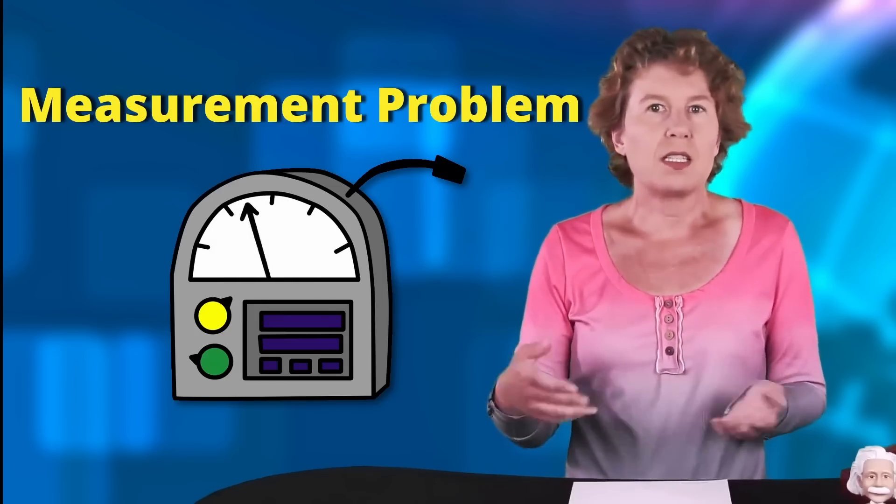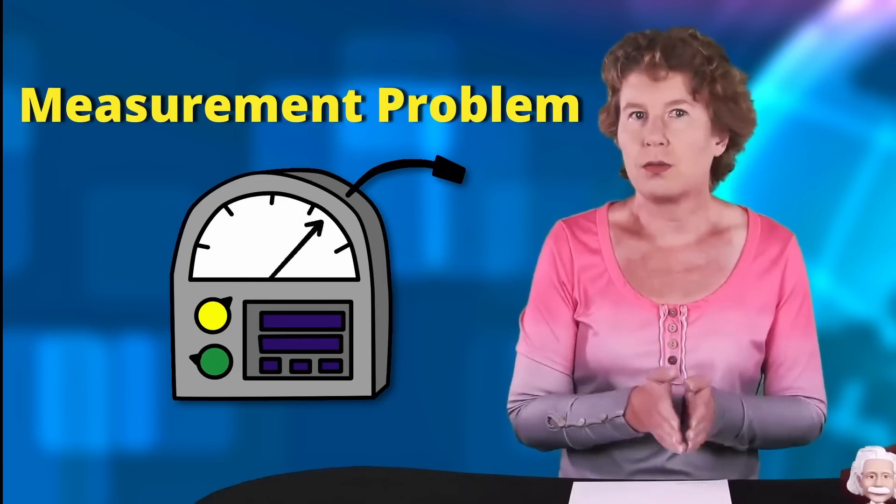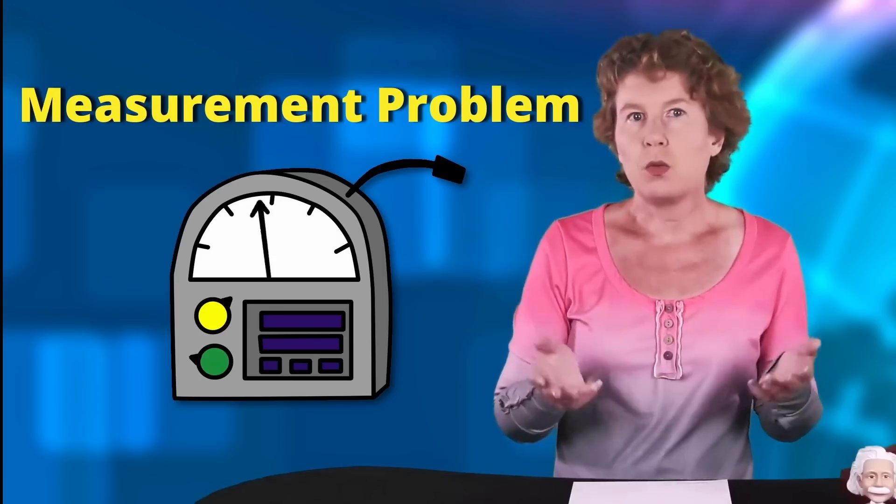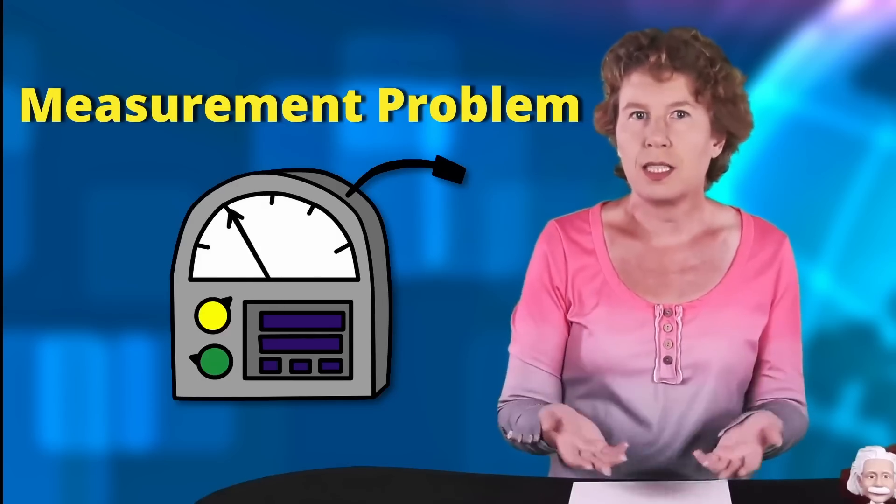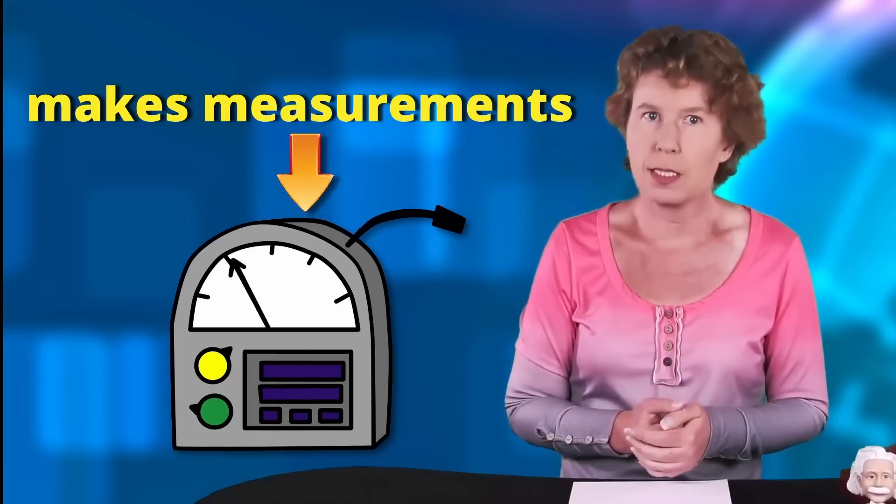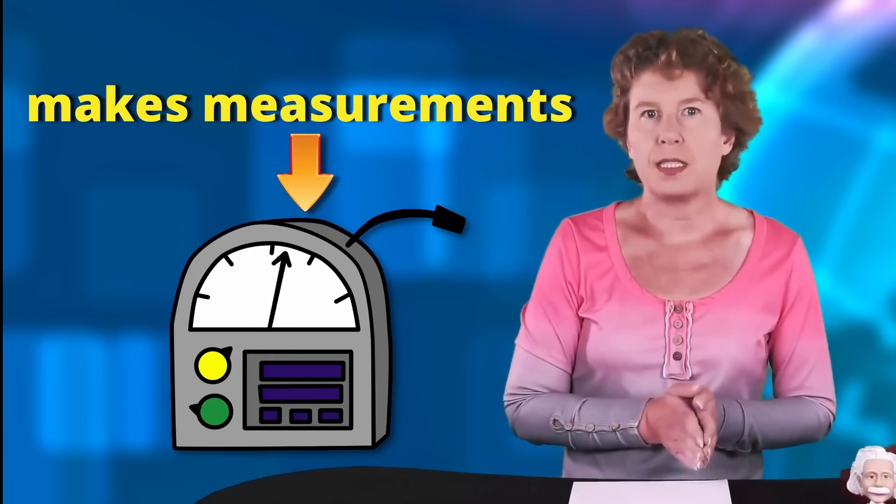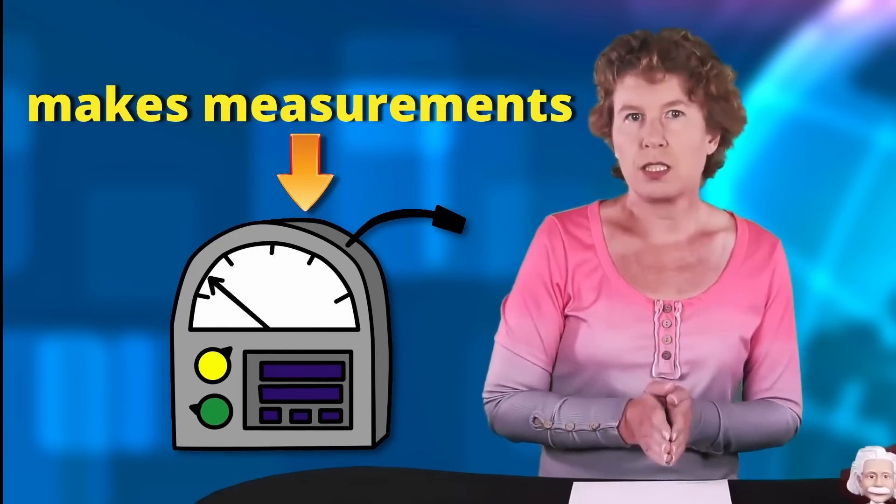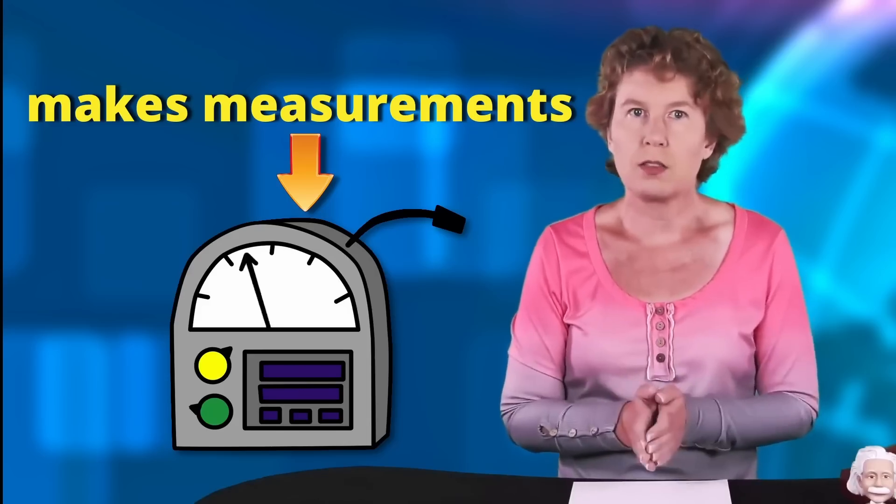The reasonable take on the measurement problem is that there is some good definition for what a measurement is. We just don't know it yet. A measurement is the interaction with a device called the detector. And even though we can't formally write down exactly what a detector is, we know what they do. They make measurements. That's the reasonable take. But the vast majority of physicists do not agree on this.